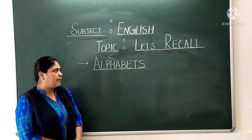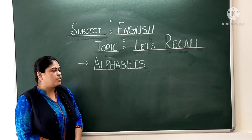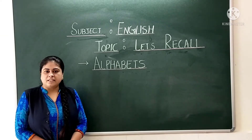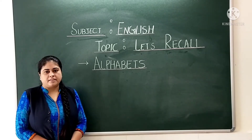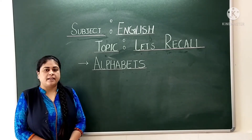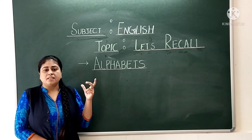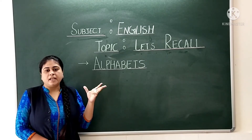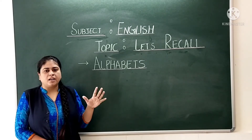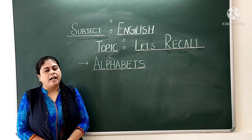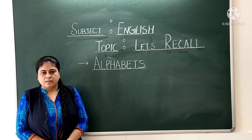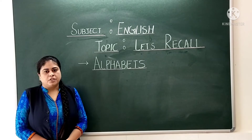Students, there are 26 letters in alphabets and letters from A, B, C, D up to Z are called alphabets. Did you all understand?